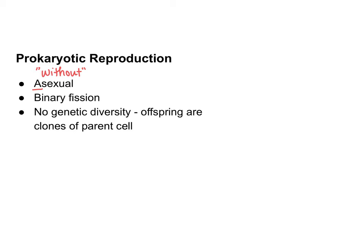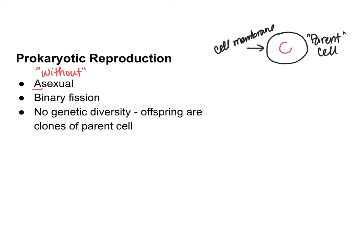Let's take a look at a simple drawing of binary fission. If we start out with the parent cell, this parent cell has a cell membrane. Remember that prokaryotes have a single circular chromosome that makes up their genome. During binary fission, the first thing that's going to happen is that the chromosome is going to be copied — it's going to make an exact copy of the original chromosome.